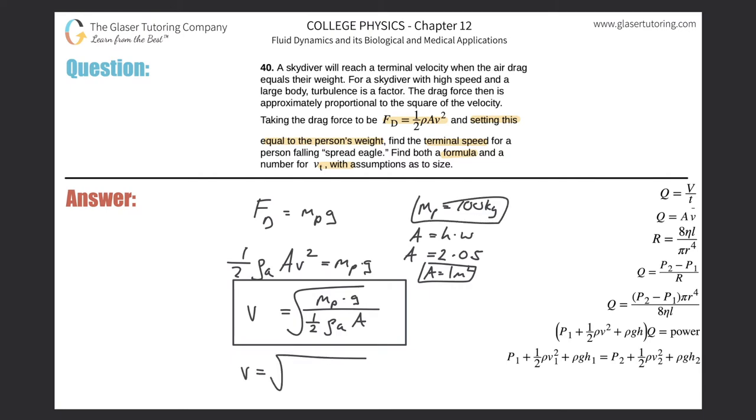Now all I got to do is plug it on in. So the terminal velocity of this particular person with those qualities will be 100 multiplied by 9.8 divided now by one half multiplied by the density of air, which is 1.29, that's in terms of kilogram per cubic meter, multiplied then by the area we just found, which I just assumed to be one. And here we go. So let's take that. So square root now of 100 times 9.8, all divided by in parentheses, 0.5 times 1.29.